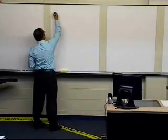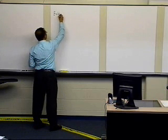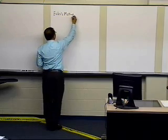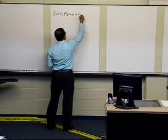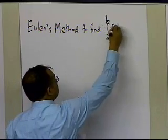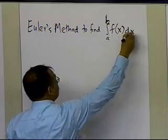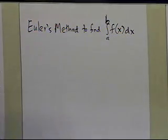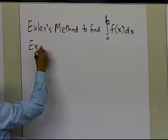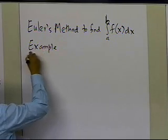In this segment, we're going to use Euler's method to estimate an integral. So Euler's method to find integral of a to b, f of x dx. We're going to try to find an estimate of this integral by using Euler's method, so in this segment we are going to take an example to show how that is done.